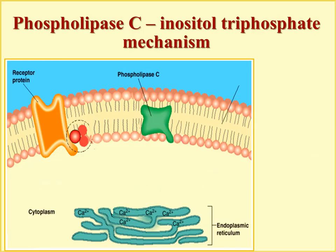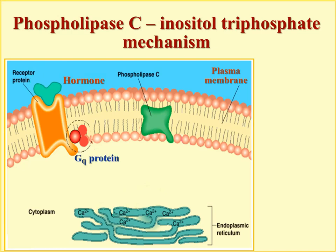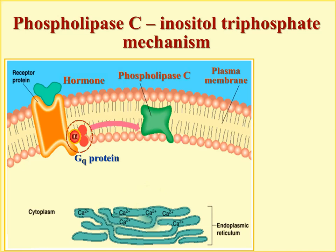Now let's observe the phospholipase C inositol triphosphate mechanism. In the plasma membrane we again have a receptor protein coupled with a G protein, but in this case when the hormone binds it activates the GQ protein, which activates phospholipase C. When phospholipase C becomes activated, it starts to split a particular phospholipid available in the membrane — phosphatidylinositol bisphosphate (PIP2), which has two phosphate groups. When it is split, it produces two second messengers at once.